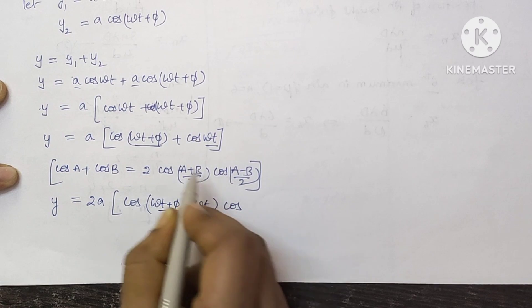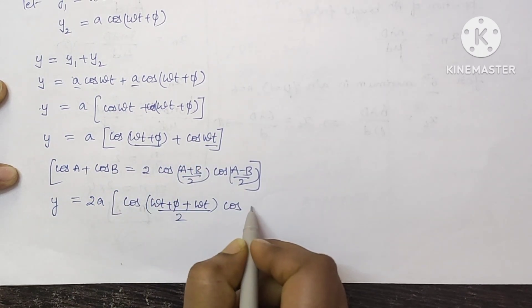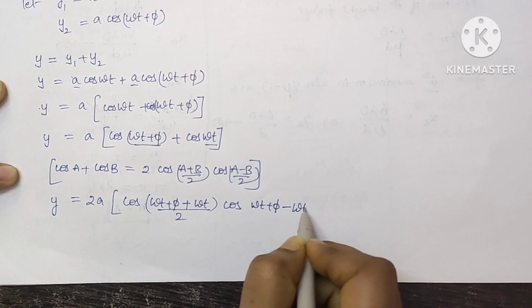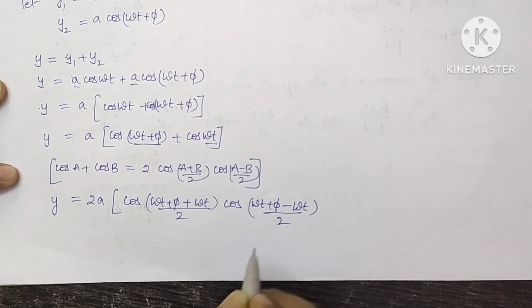And the other one is cos A minus B: omega t plus phi minus omega t whole divided by 2.